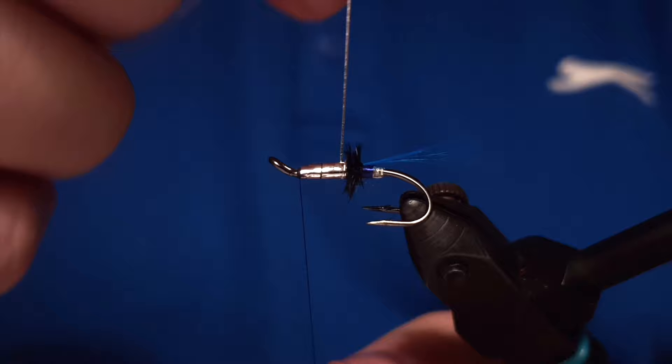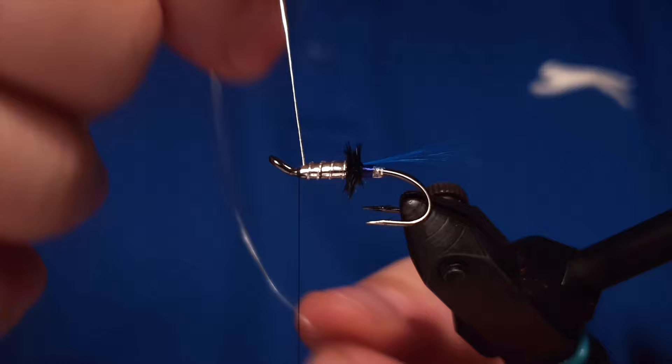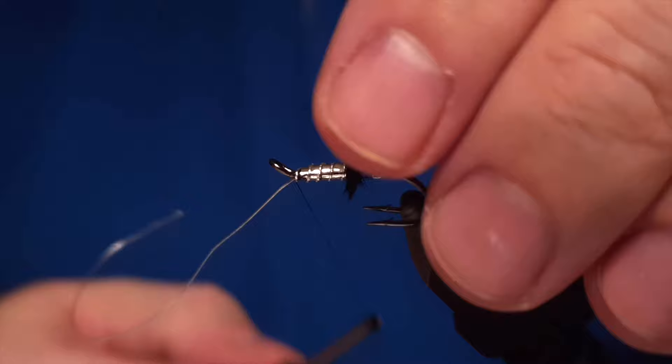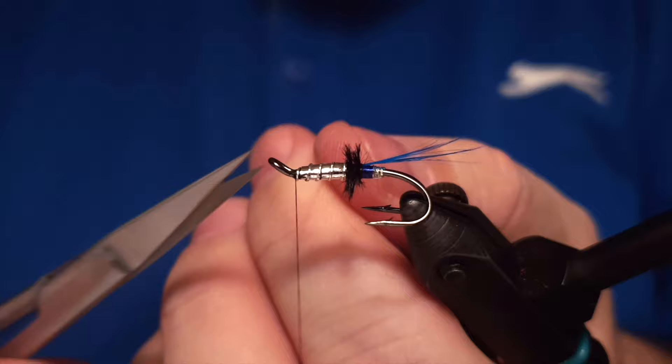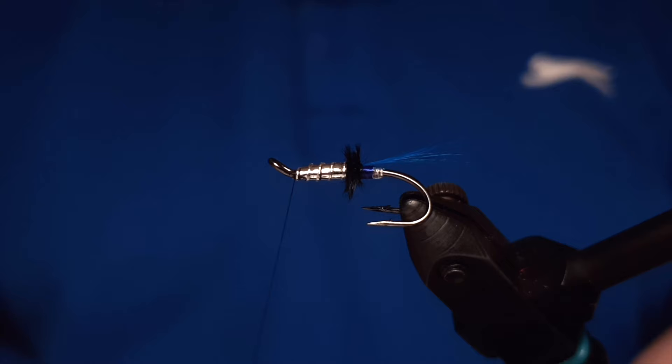Then we wrap the oval silver around the body until the front of the head. Make sure there is place, of course, for the wing and for the beard, because we do have a beard and the wing. You can actually choose if you like to put a beard or a collar on the fly. It's just yours to decide.